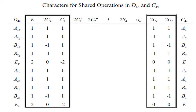The characters for the shared operations define an irreducible representation of C4v, which is a subgroup of D4h. There is a correlation between the representations of D4h and C4v. There are only 5 irreducible representations in C4v while there are 10 irreducible representations for D4h. So we conclude: each representation of C4v correlates to 2 of D4h, and this can be shown by a correlation diagram.